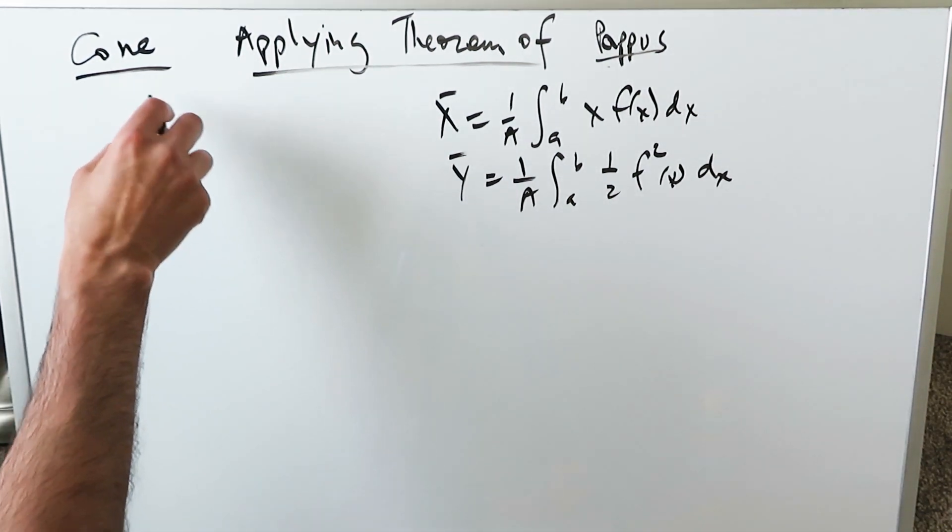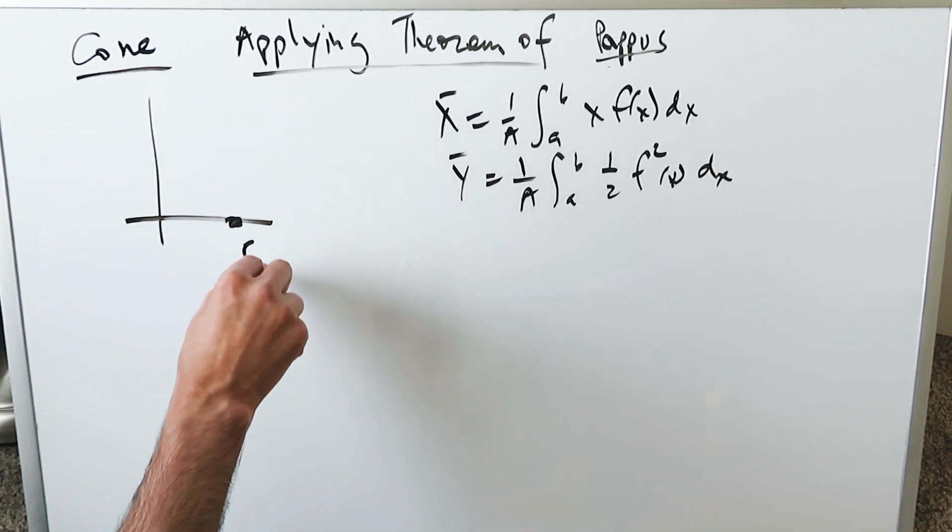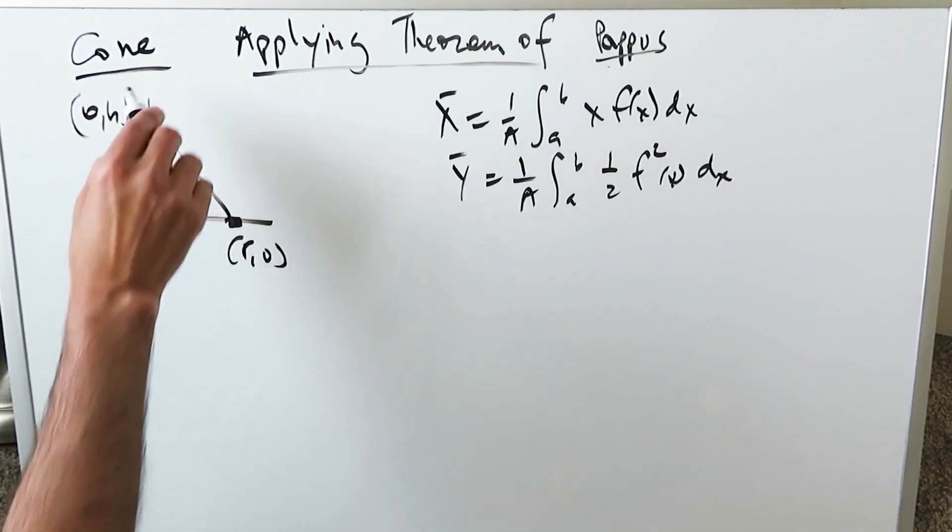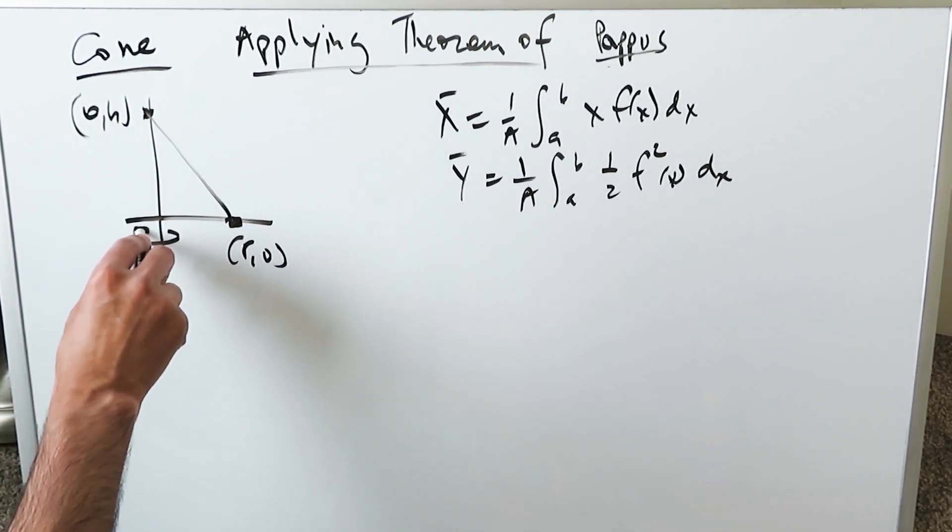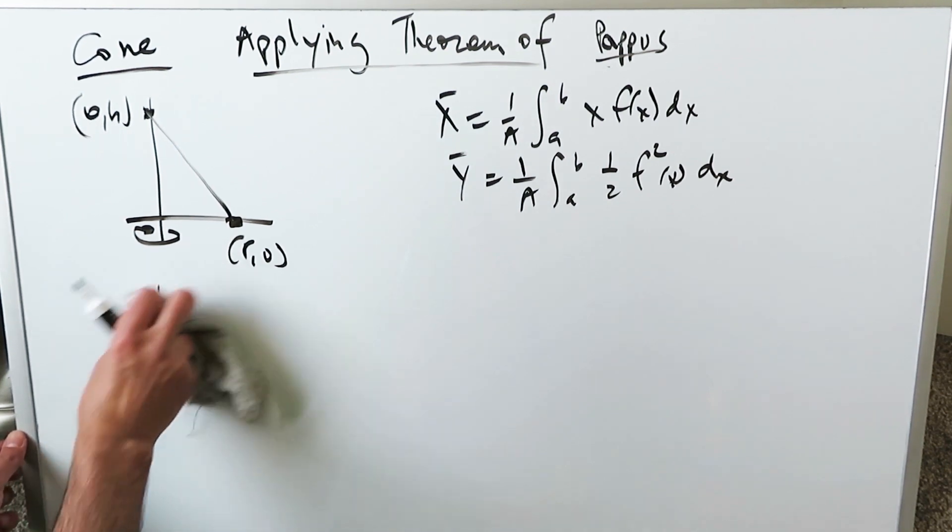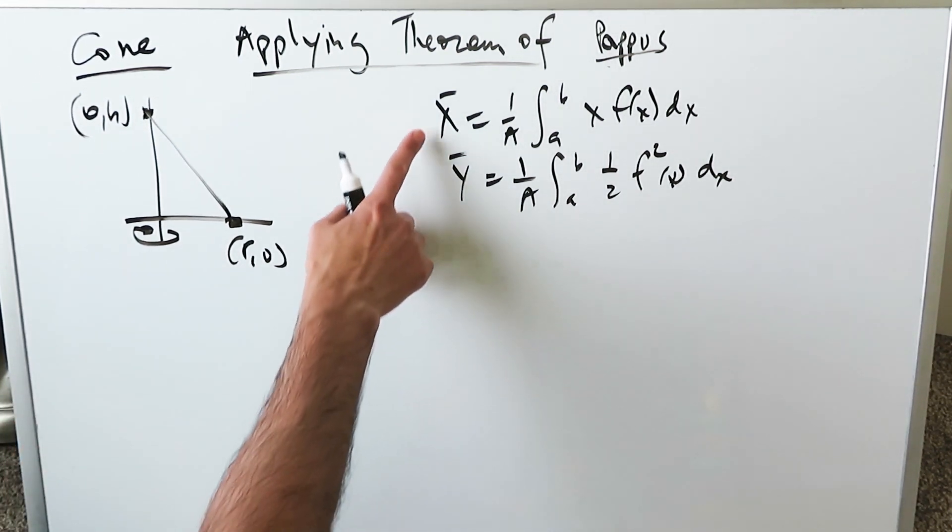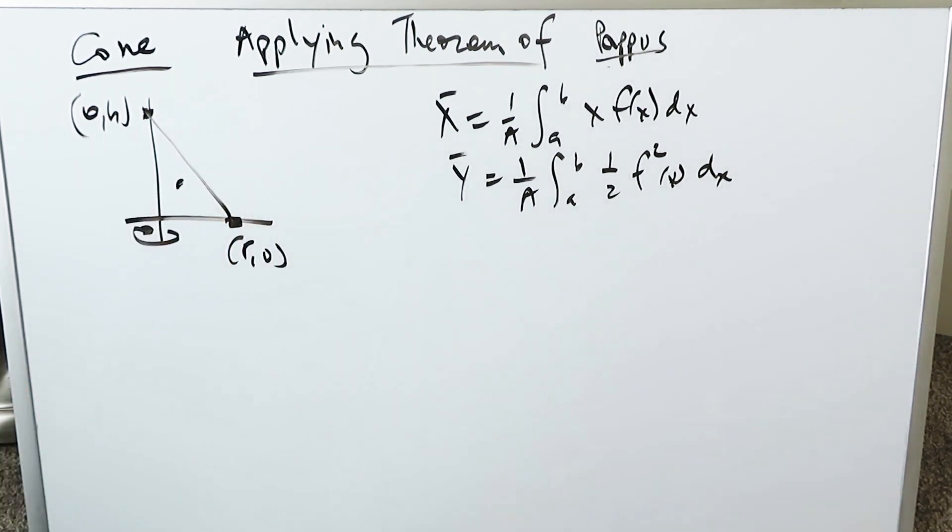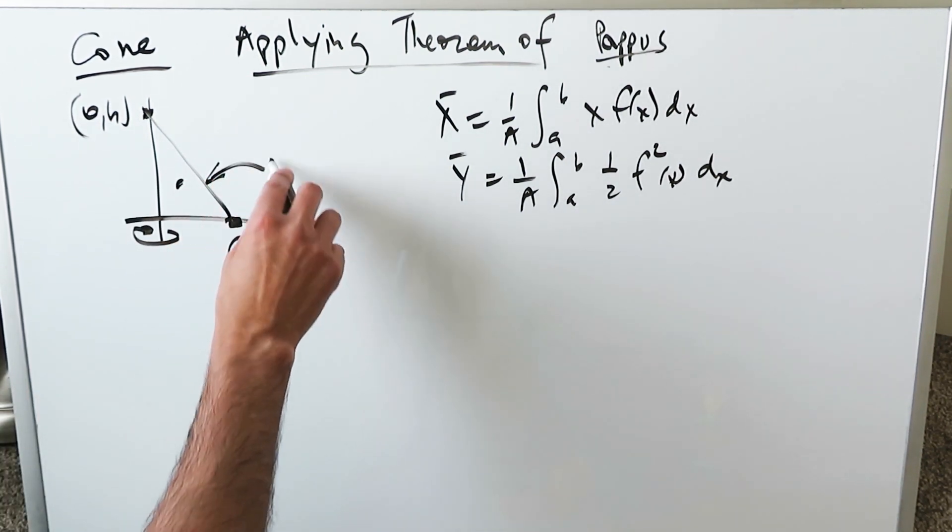Everything will begin by means of this depiction right here: r comma 0, 0 comma h. You have a certain segment, you do a y-axis rotation, you are generating a cone. We are determining the volume of this cone by means of this theorem, and you have to determine the x and the y value of the centroid. It could be some value right over here. You have to determine this equation also.